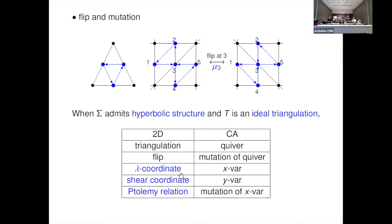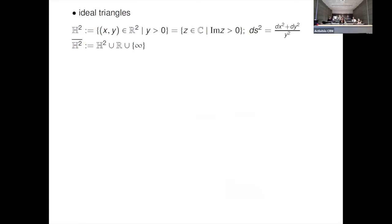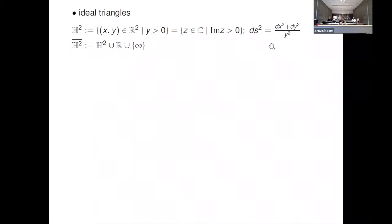From now I explain how lambda coordinates and Ptolemy relation appear. For this purpose, I should explain 2D hyperbolic geometry in detail. Let H² be the upper half-plane — one of the good models of hyperbolic 2-dimensional structure. This is a two-dimensional layer space where we assume the y-coordinate is only positive. We can write this space using a one-dimensional complex space whose imaginary part is positive. The metric of this space is given by this formula, meaning that if you go to the x-axis, the length diverges, so we cannot approach the x-axis.